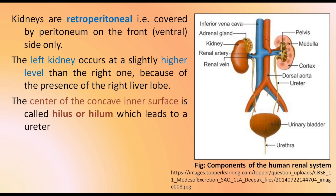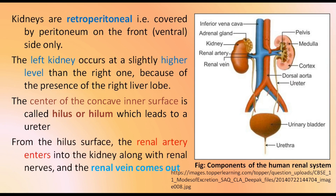The center of the concave inner surface is called the hilum, which leads to the ureter. From the hilum, the renal artery enters into the kidney along with the renal nerves, and the renal vein comes out. Here we can see the renal vein and renal artery going into the kidney at the hilum region, and the renal veins coming out.